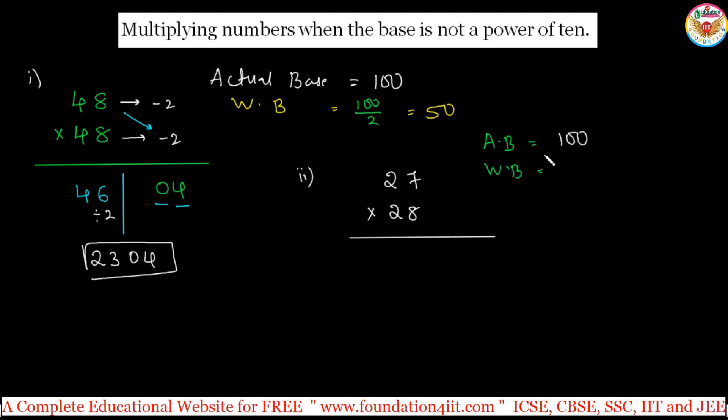27 and 28 are not close to 10 or 100, so take 100 as the actual base. Now working base: both numbers are close to 20, so you can take working base as 20. But should know in mind, 100 divided by what gives 20? So 100 divided by 5 is 20.